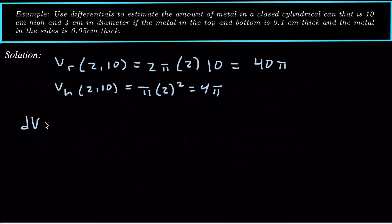So dV is going to equal 40 pi times dr, which is 0.05, plus V sub h, which is 4 pi times dh, which is 0.2. So we add these two together. 40 pi times, let's see, 0.05 is 1 over 20 plus 4 pi times 1 over 5.